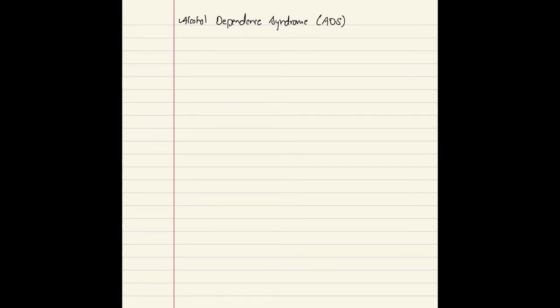Today we're going to learn about Alcohol Dependence Syndrome or ADS. Not all people who drink alcohol can be called alcohol dependent. There are seven characteristics of dependence upon alcohol, out of which three or more should be present for more than one year to diagnose alcohol dependence.